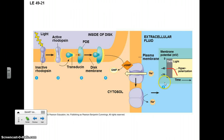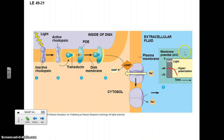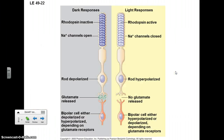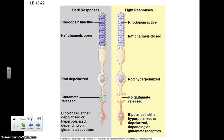In the dark, sodium ions are able to flow in, and the inside of the cell is less negative than it might otherwise be. In the light, the flow of sodium is stopped, so the inside of the cell becomes even more negative — hyperpolarized. That is essentially the signal that light is present.